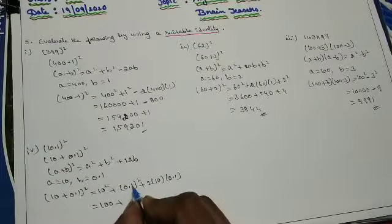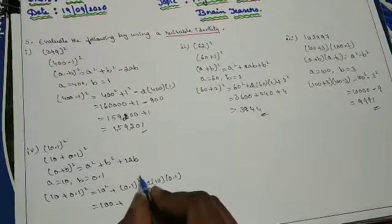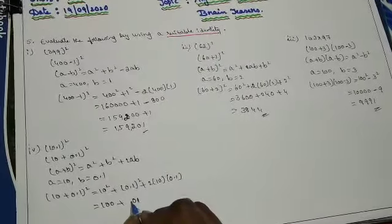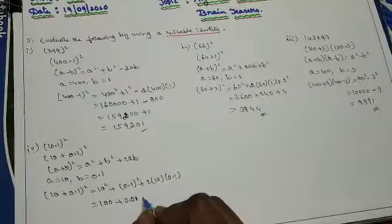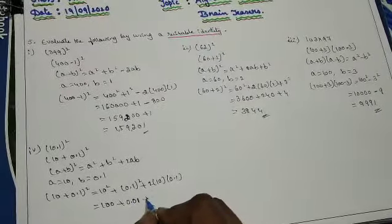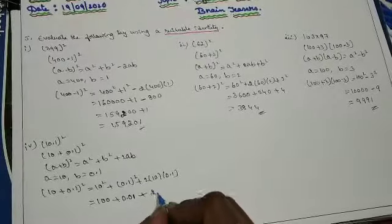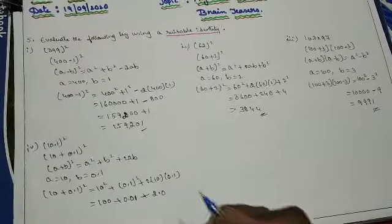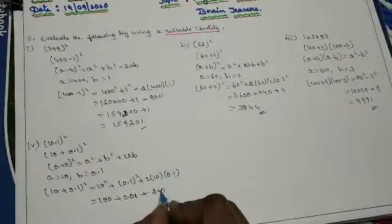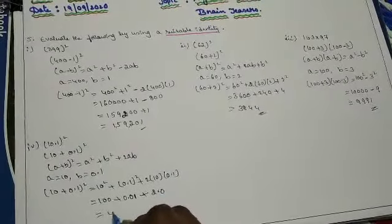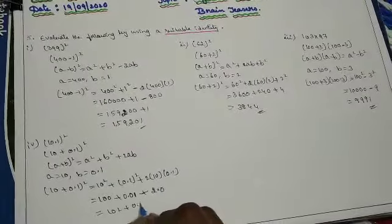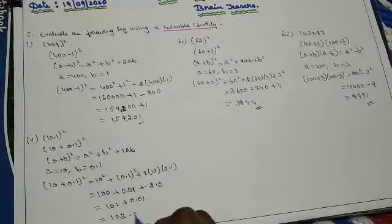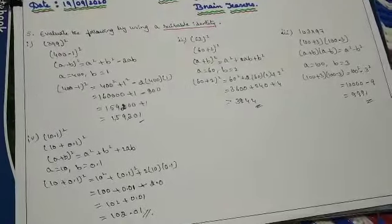Then 10 square is nothing but 100. 0.1 whole square: since after the decimal point you have 1 digit, but since it is squared you should have 2 digits, so it can be written as 0.01. Plus 2 into 10 into 0.1 is 2.0, which is 2. Then 100 plus 2 is 102, plus 0.01. The final answer is 102.01.